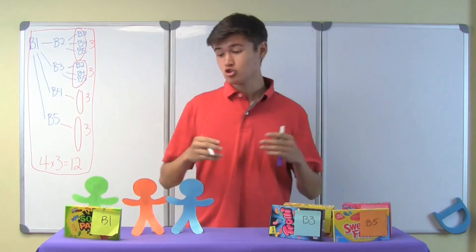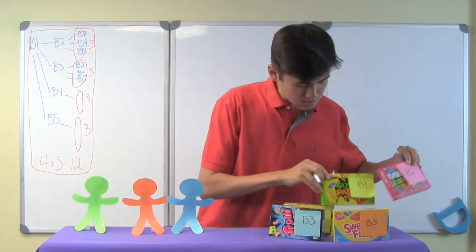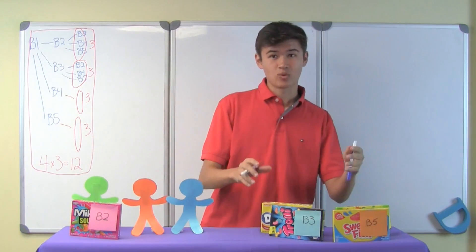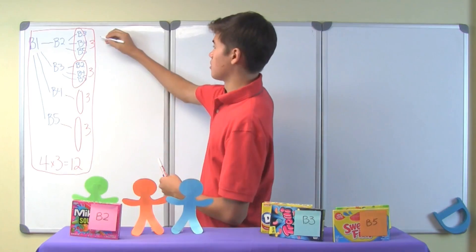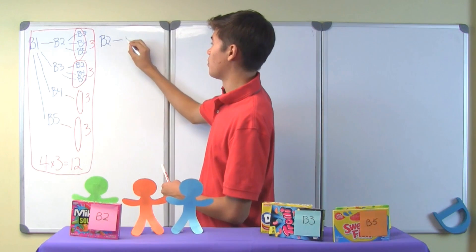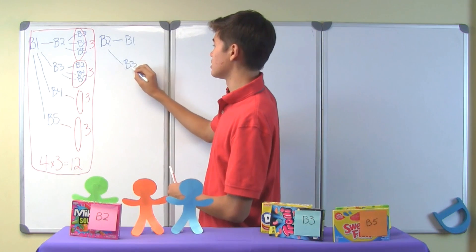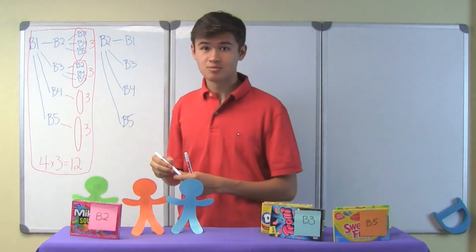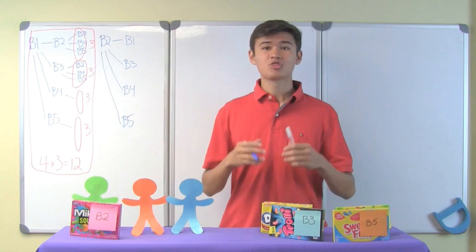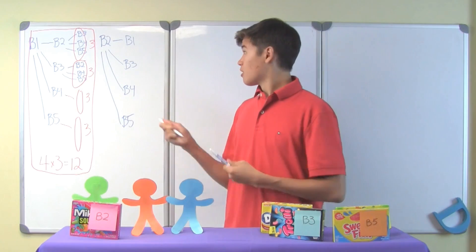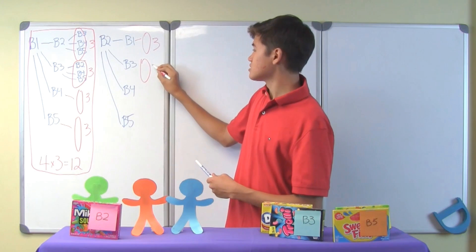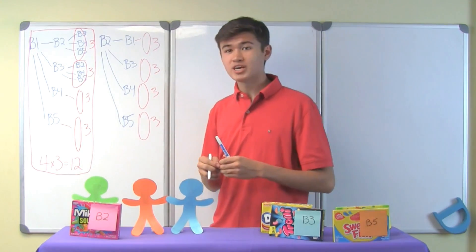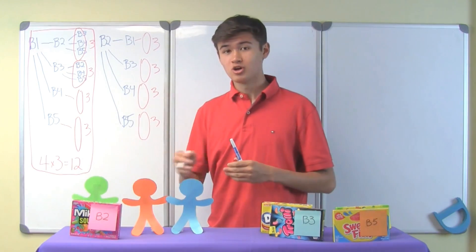Now what happens if we give box number two to the first winner? If we give box number two to the first winner, then we will have four choices for the second winner: box one, box three, box four, or box five. And whichever choice we give to the second winner, we will have three options remaining for the third winner for each choice. Once again, we will have four times three, or twelve choices, if we pick box number two for the first winner.